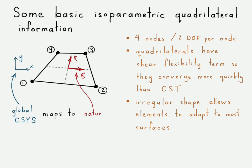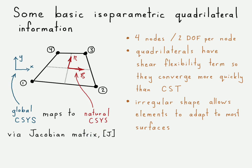We have two coordinate system types: our global coordinate system that we're familiar with, and a natural coordinate system that we are just investigating now, along with this Jacobian matrix that is used to map between both of these.